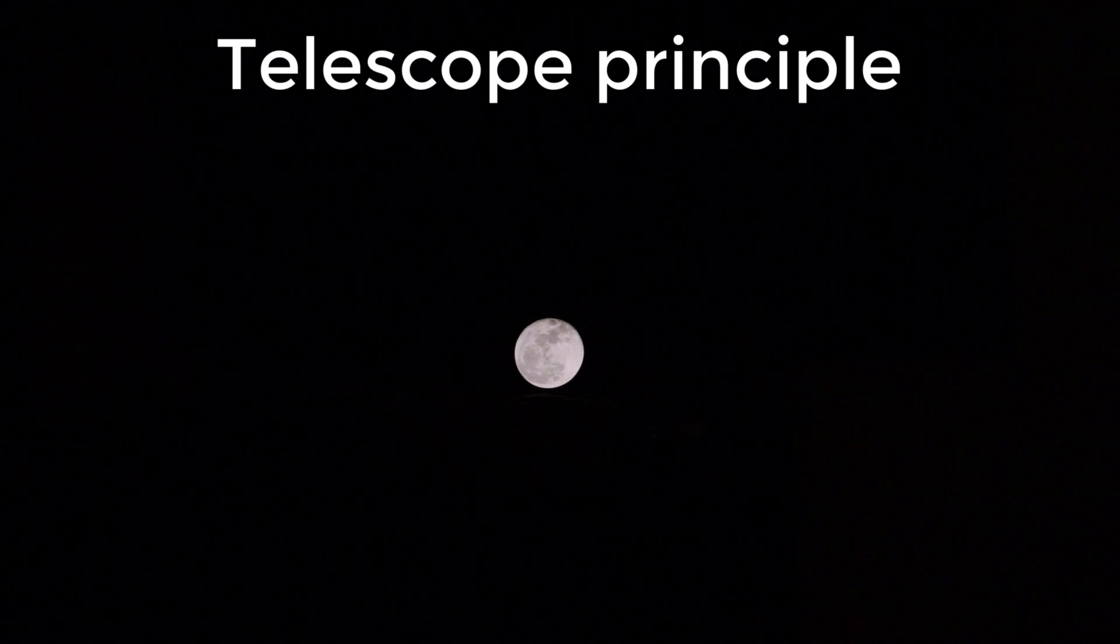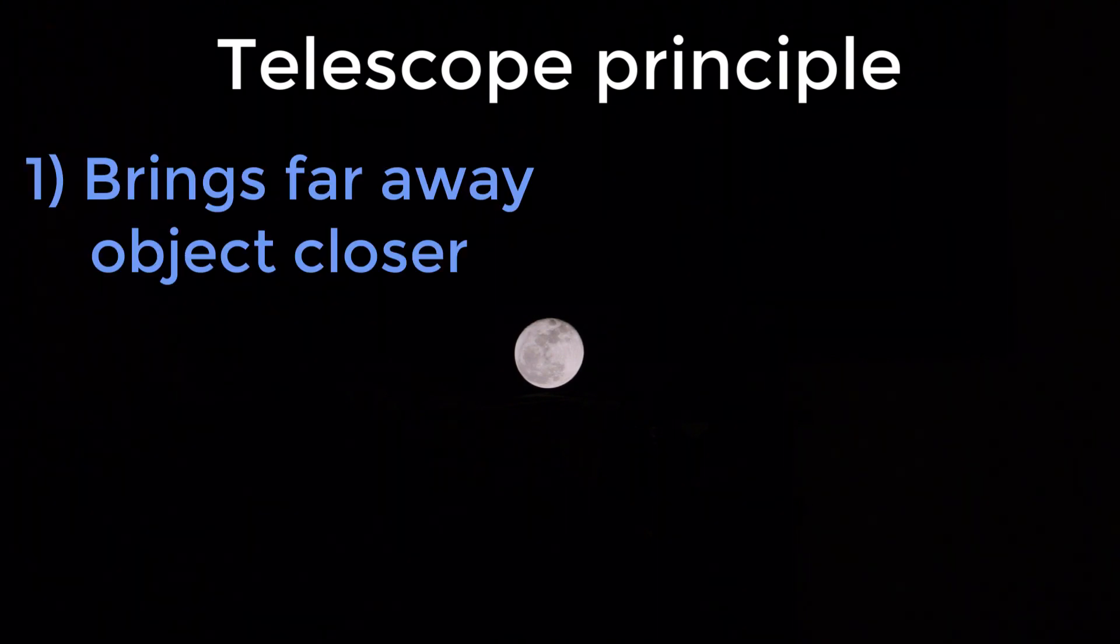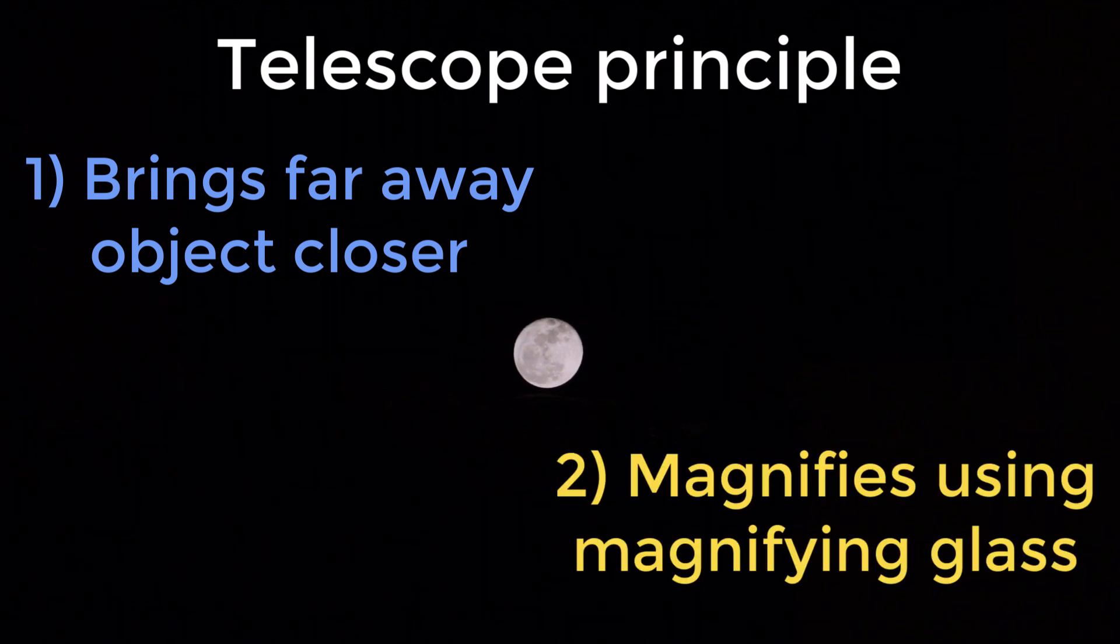So in order to use our magnifying glass, somehow we need to bring that moon closer to us. And that's what a telescope does. It brings a faraway object closer to you, and then uses a magnifying glass to magnify the image. That's the principle of a telescope.